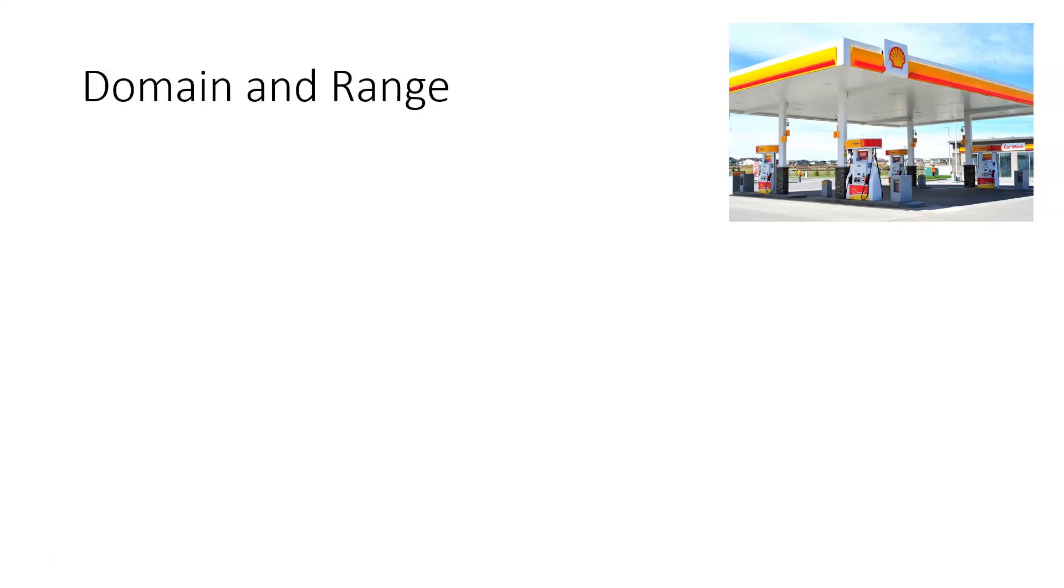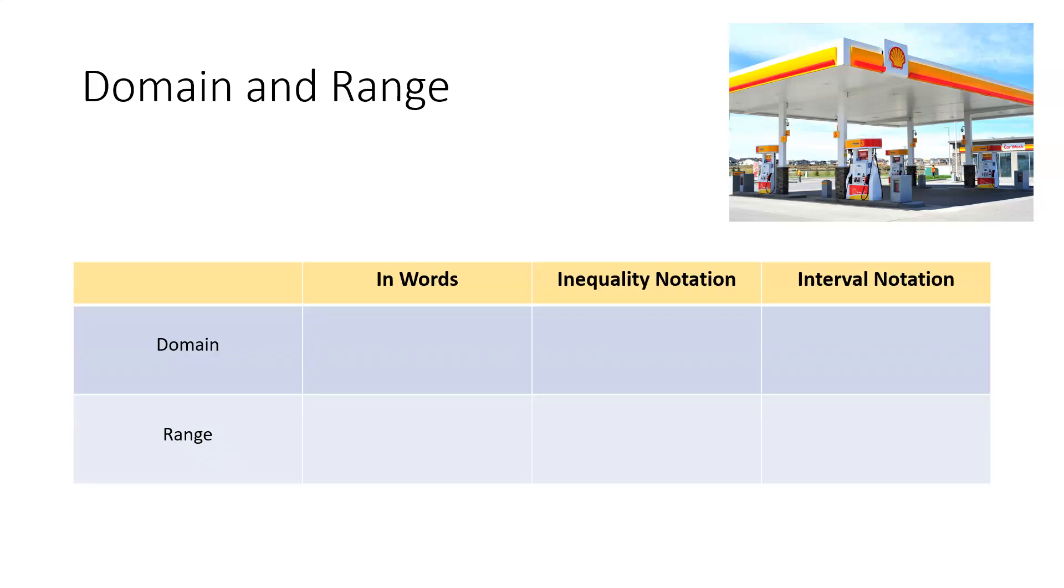And so the way that we work around that is, whenever you're talking about domain and range, and the domain and range contains an infinite number of values, then we can represent the domain and range in three different ways.